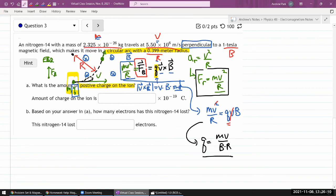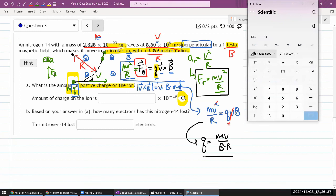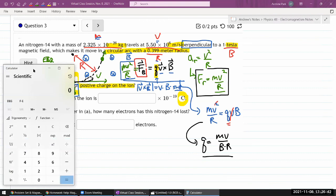I think everything on the right-hand side here is something you can just plug in. It looks like we are given all the numbers in the basic SI unit, so I think I can just plug in the numbers and it'll give me something in the basic SI unit of coulomb. Let me bring up my calculator and plug in the numbers. Mass 2.325 times 10 to the power of minus 26 kilogram times the velocity 5.5 times 10 to the power of 6 meter per second, divided by 1 tesla, which is actually quite a large magnetic field, and again divided by the radius 0.399.